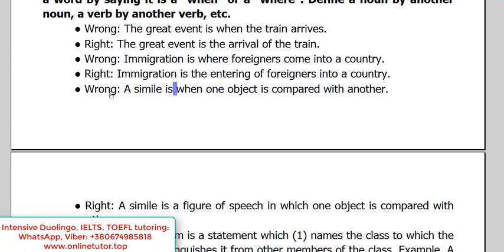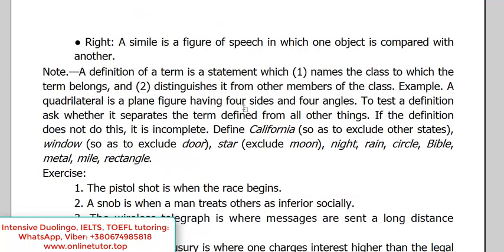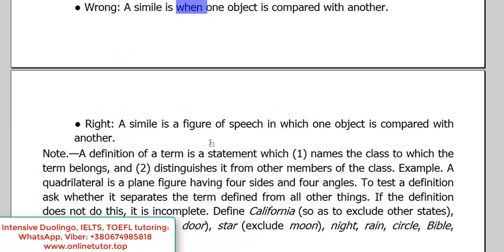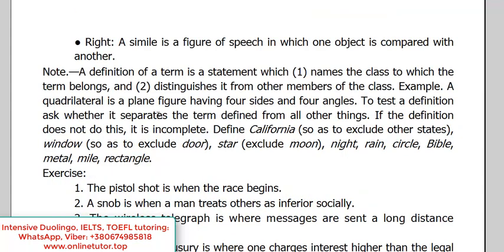'A simile is a stylistic device used in literature.' The incorrect version: 'A simile is when one object is compared with another.' Again, I have 'is,' so I expect something nominal. The correct variant: 'A simile is a figure of speech in which one object is compared with another.' Or we could write 'A simile is comparing one object with another' — a gerund. It's not as ideal as a noun, but it's far better than 'to do something.'